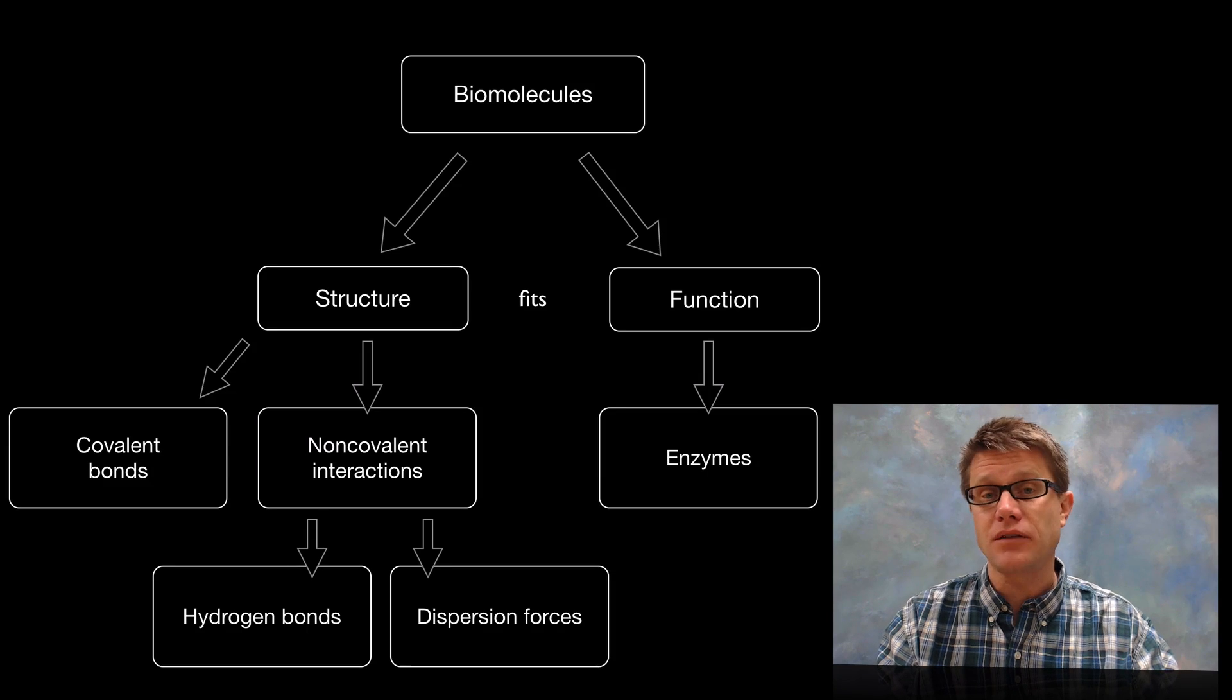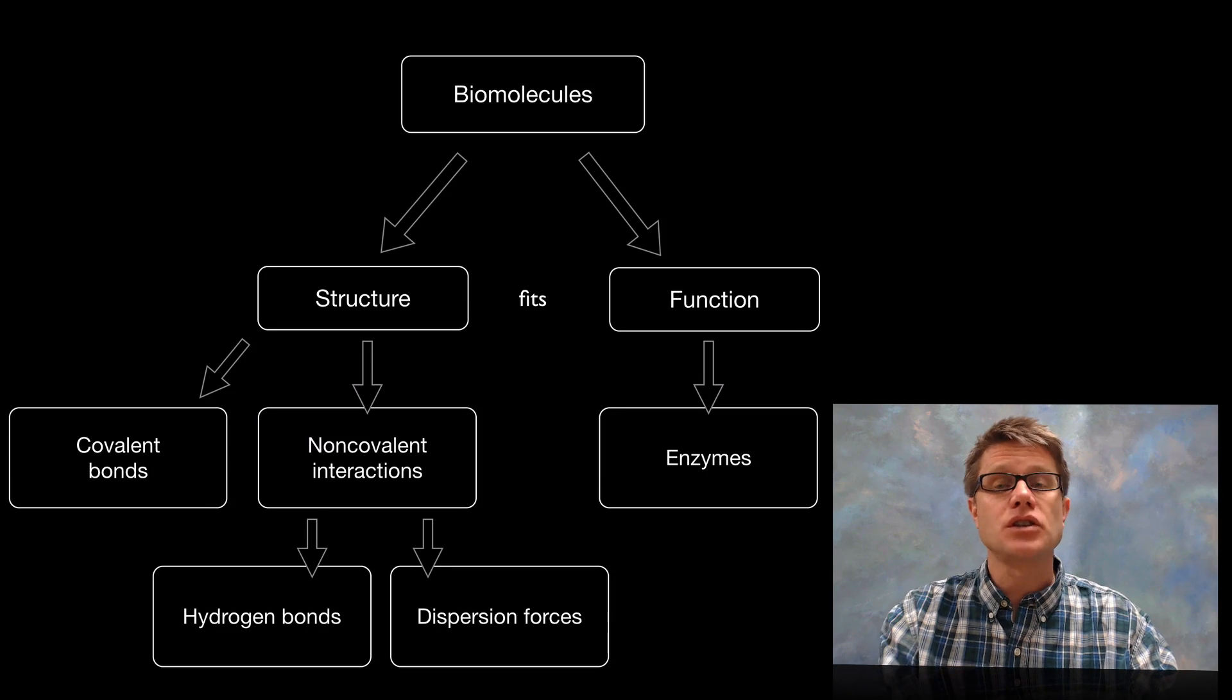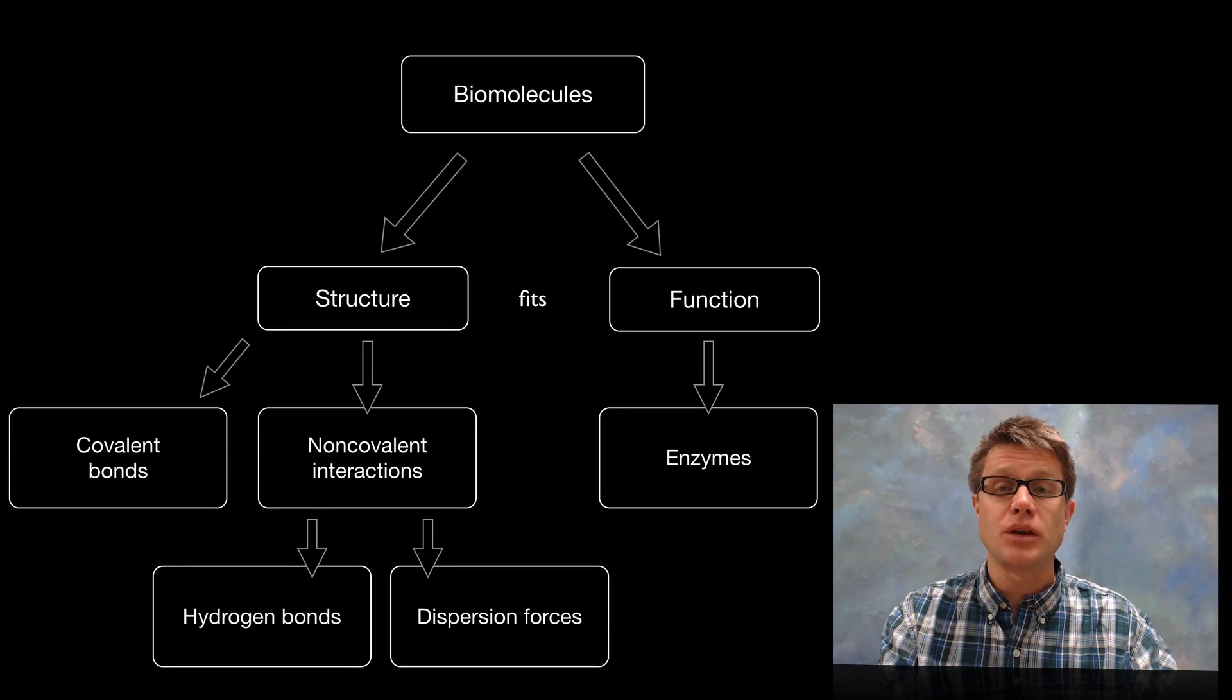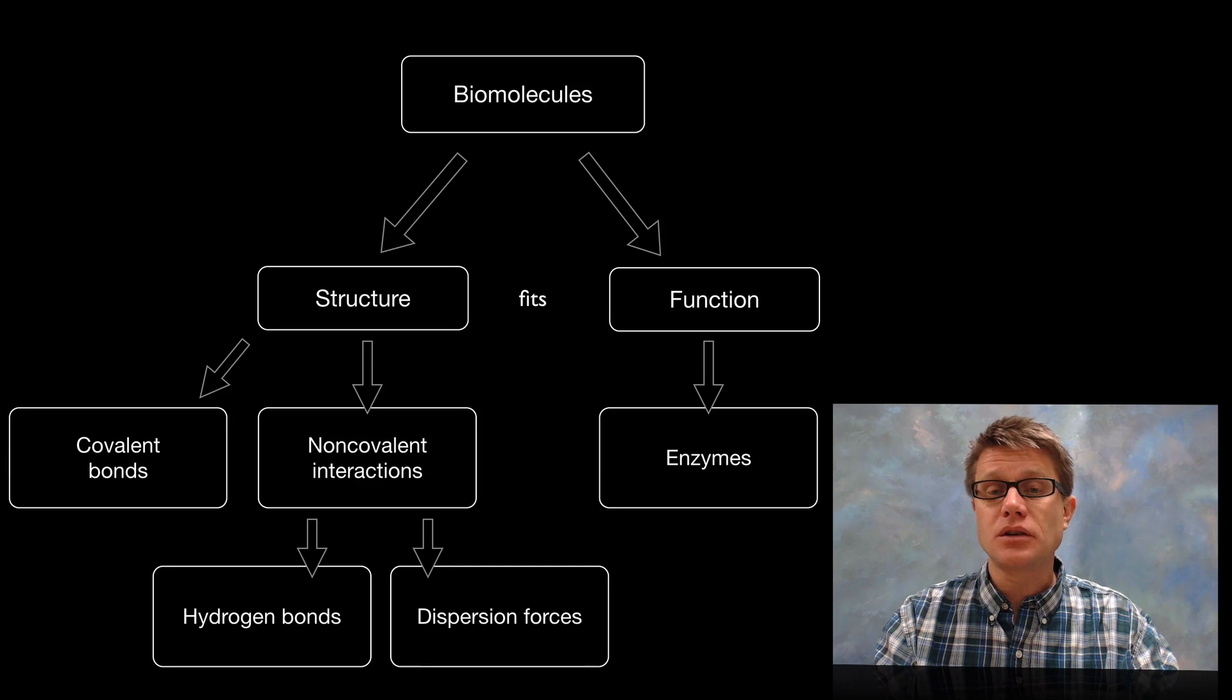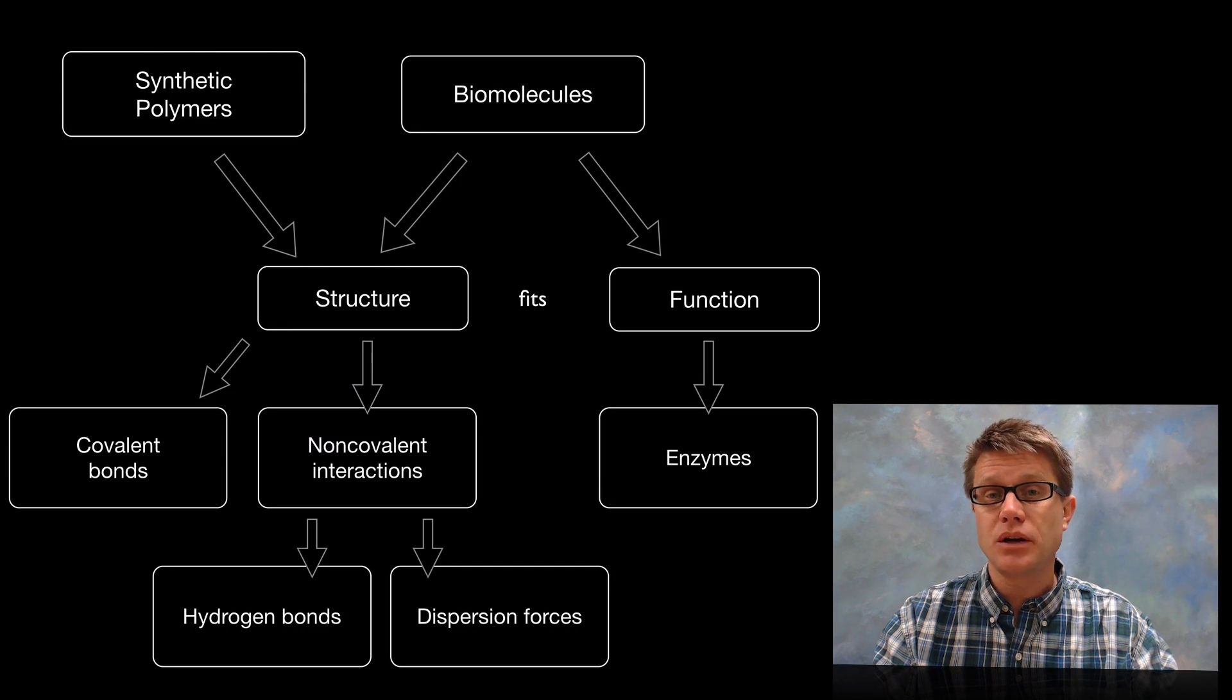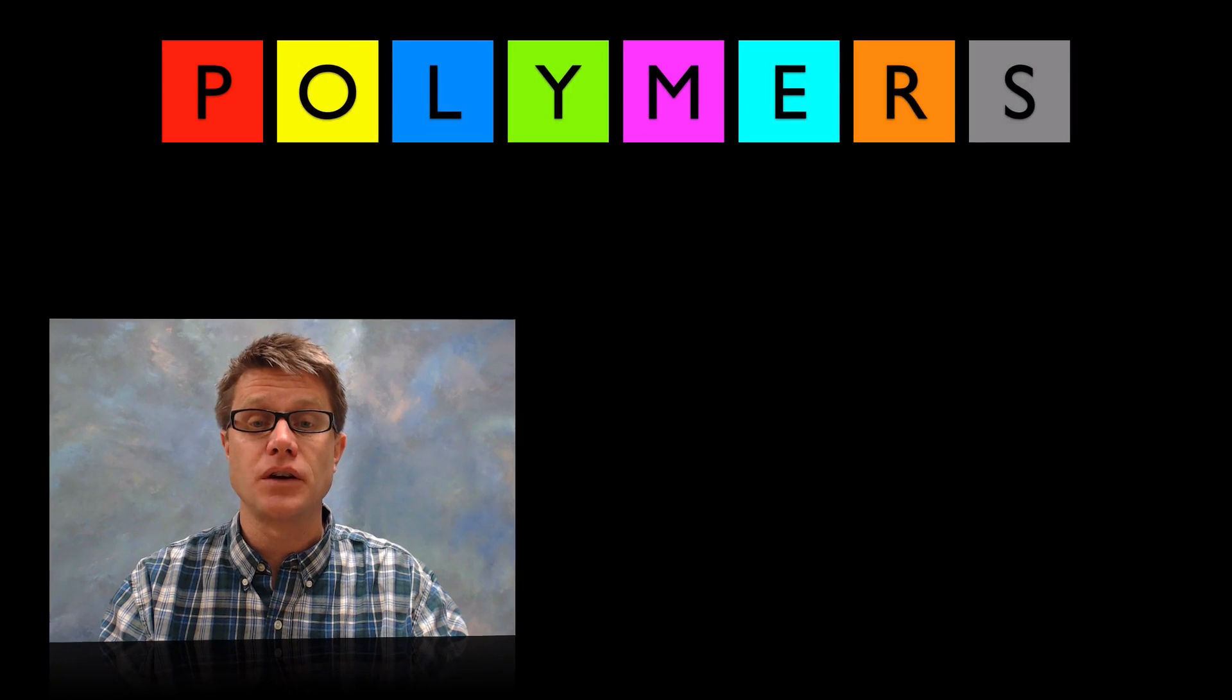So for example an enzyme has to have that perfect shape so the substrate can fit exactly in it and we can break that down. Now as we start to make polymers of our own it's important that we understand how their structure fits their function as well.